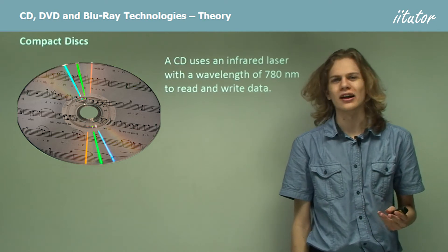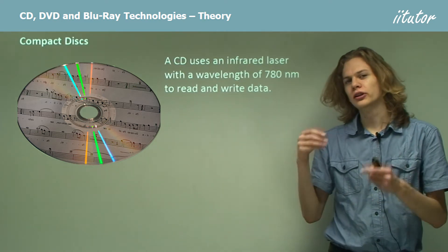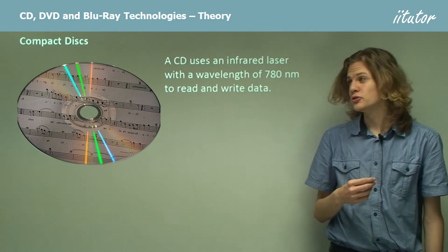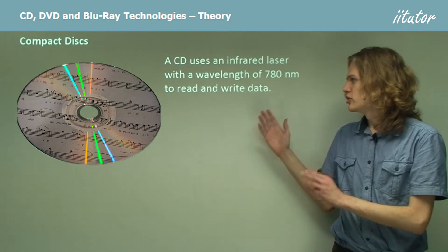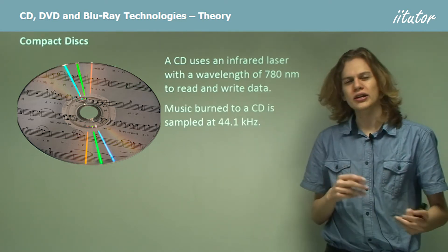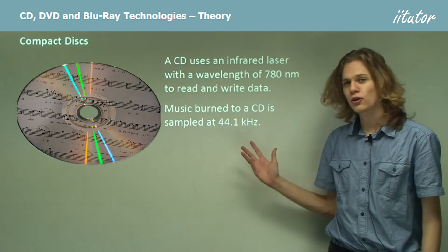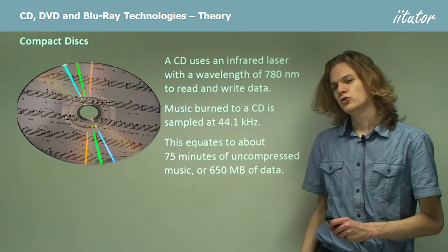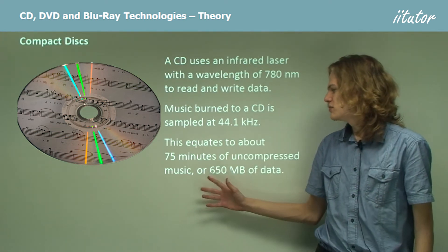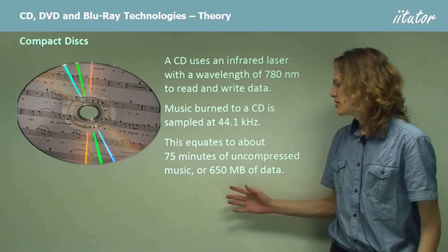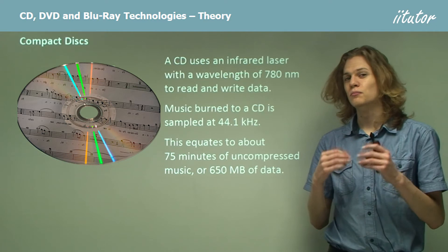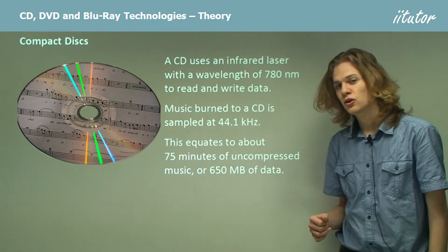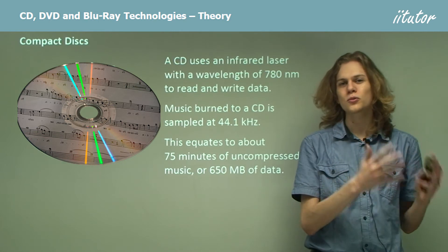Let's start with the CD, or compact disk. When burning pits into a CD, it uses a laser wavelength of 780 nanometers, which corresponds to infrared light, and can use this to read or write data to the disk. When we burn music onto a CD we use a sampling rate of 44.1 kilohertz — that is, 44,100 samples per second. This equates to 75 minutes of uncompressed music, or about 650 megabytes of data. Of course, if we compress the music using various compression algorithms we can make the tracks much smaller, though this makes it harder to convert the signals back into music.